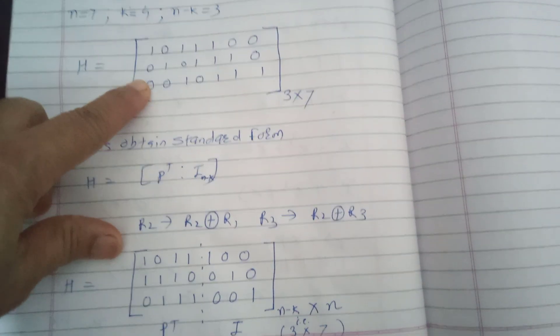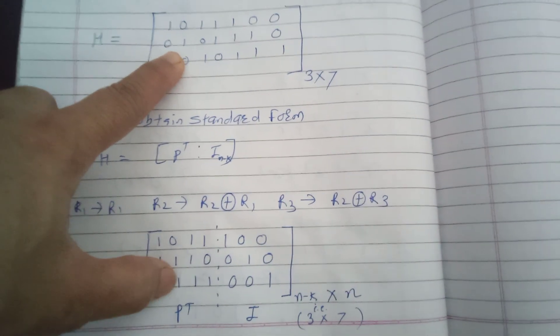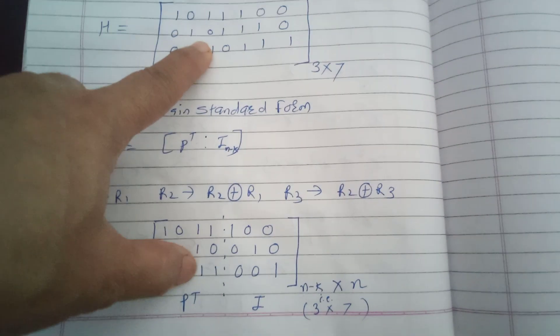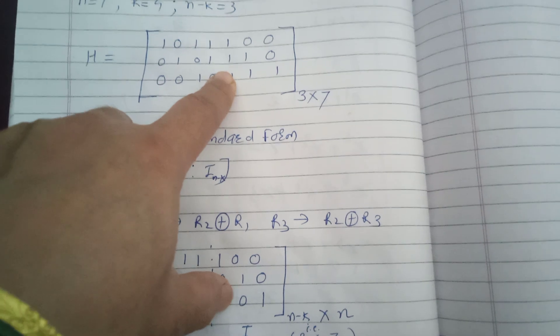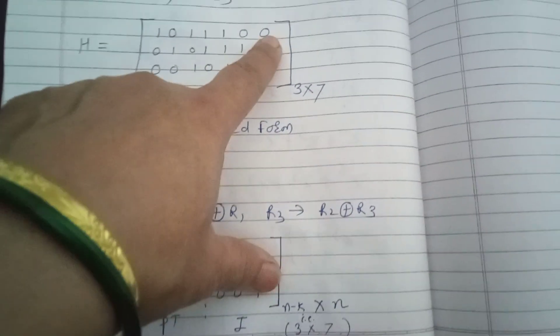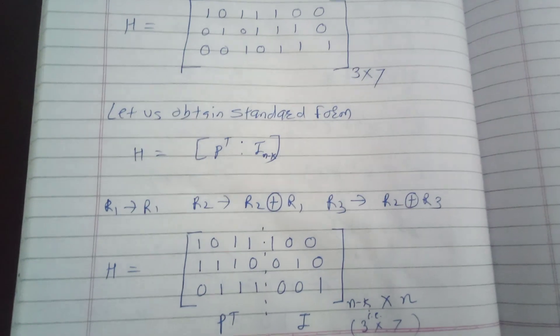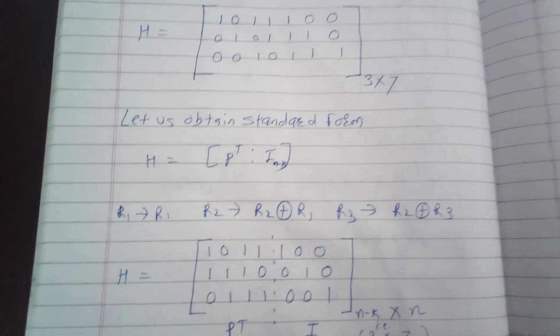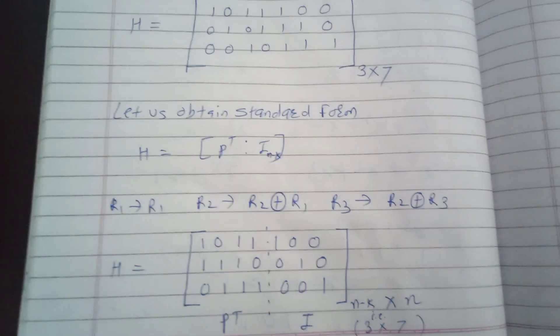Performing the final row operation R3 = R2 + R3 using mod 2 XOR: 0+1=1, 0+0=0, 0+1=1, 1+1=0, 1+0=1, 1+1=0... The mod 2 operation means even number of 1s gives 0, odd number of 1s gives 1.